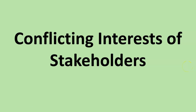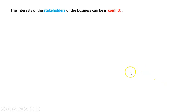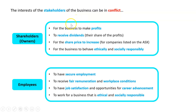The very final thing to consider with all our stakeholders is how the interest can be in conflict. And that's where the really top marks are for this topic on your SACS and the exam. The interest of one group of stakeholders can be in conflict with another, so let's just take a few as examples — but it could be any two stakeholders.